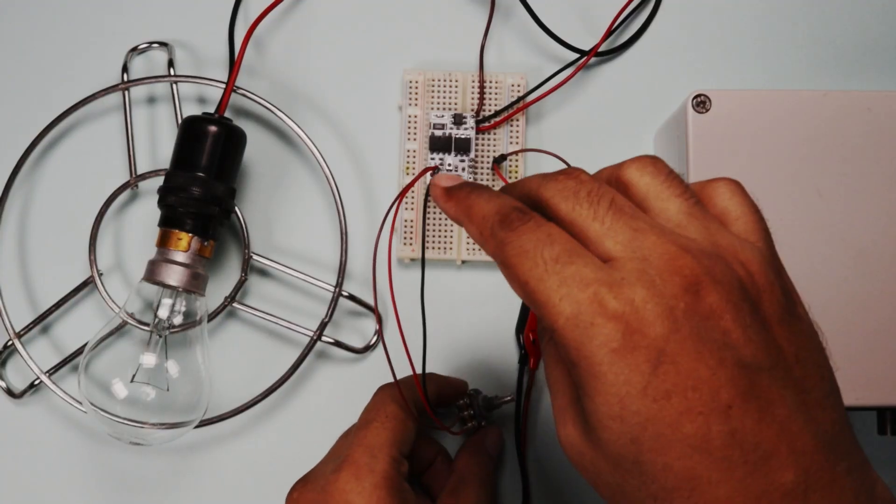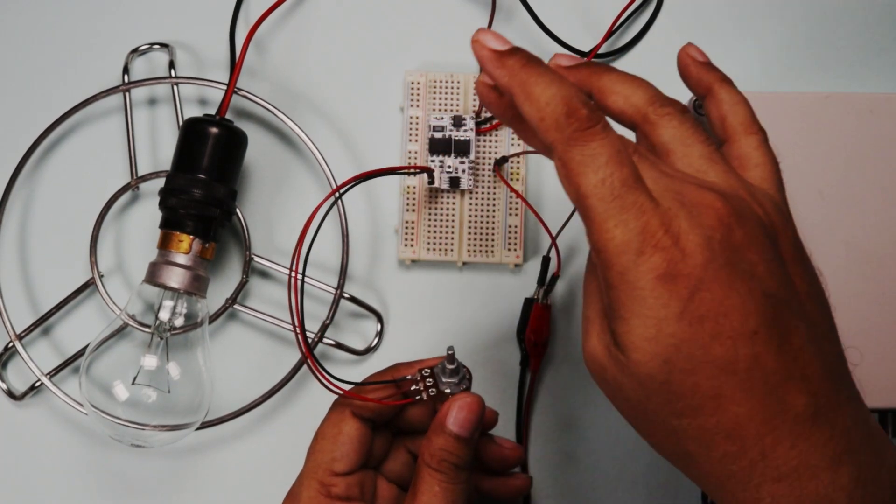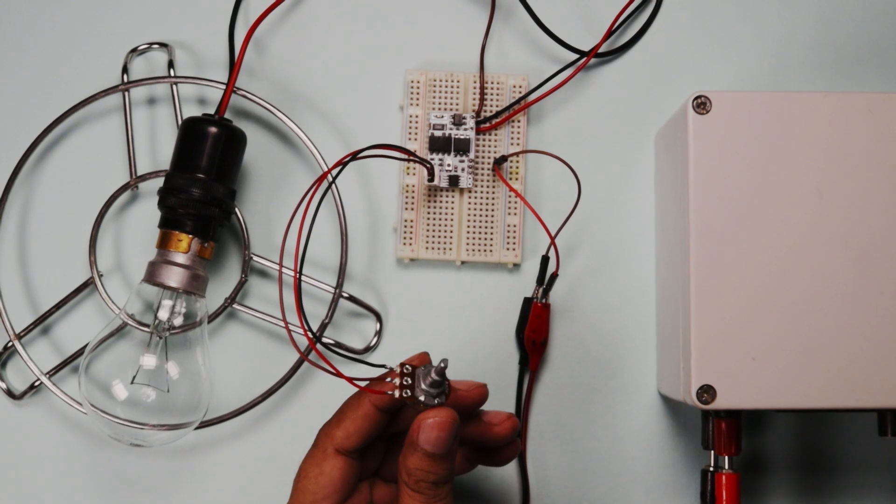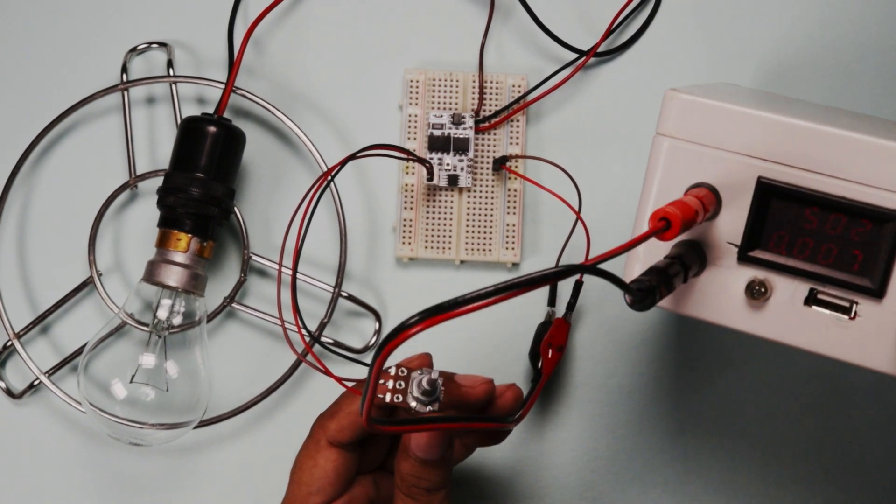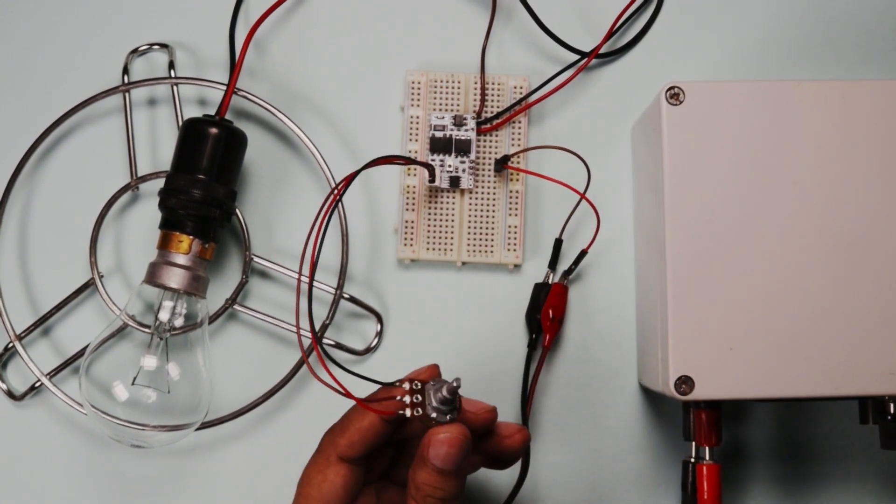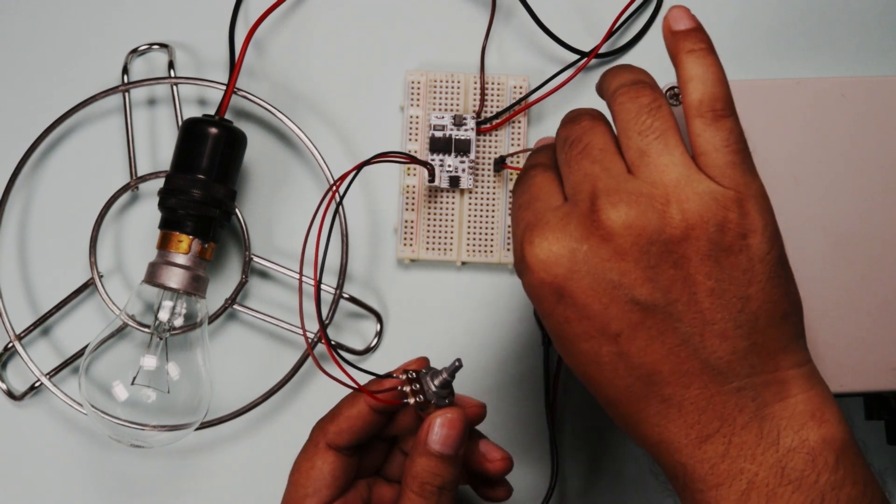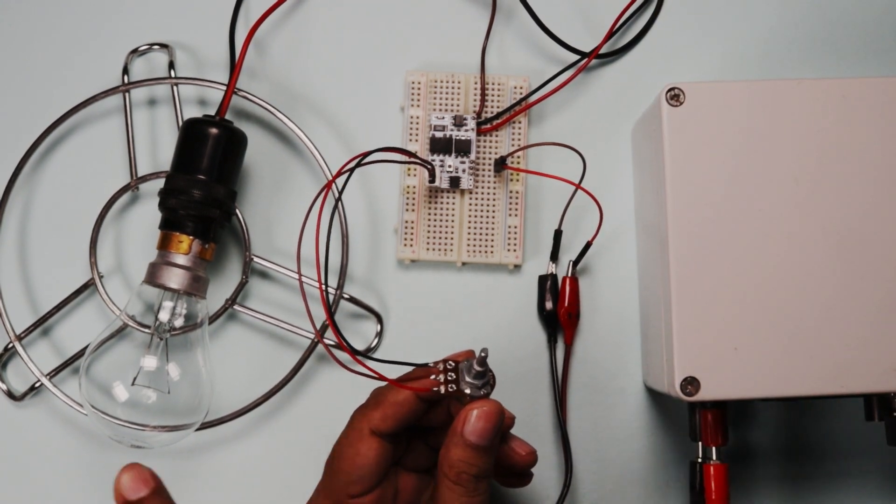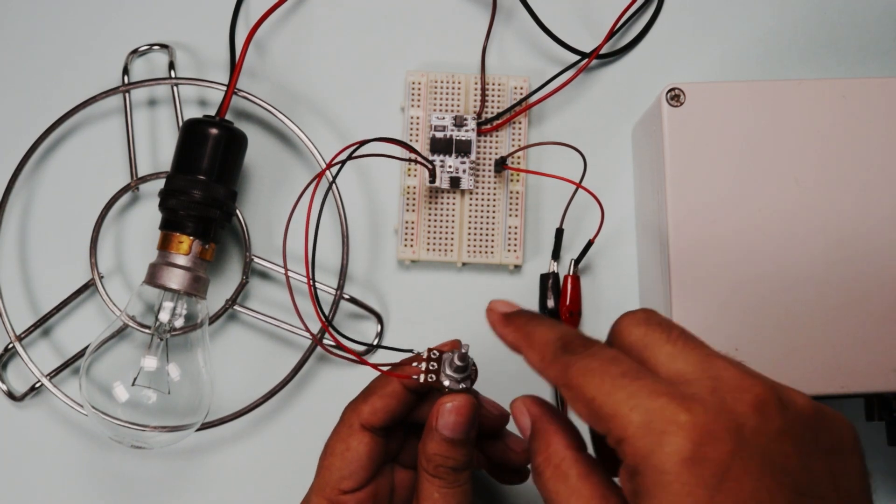Now, I have connected a 10 kilo ohm potentiometer with this module for the third demo. Here, I have connected a 5 volt external power supply to power up this module. Now, I will change the filament bulb glow by rotating the knob. So, let's see how it works.